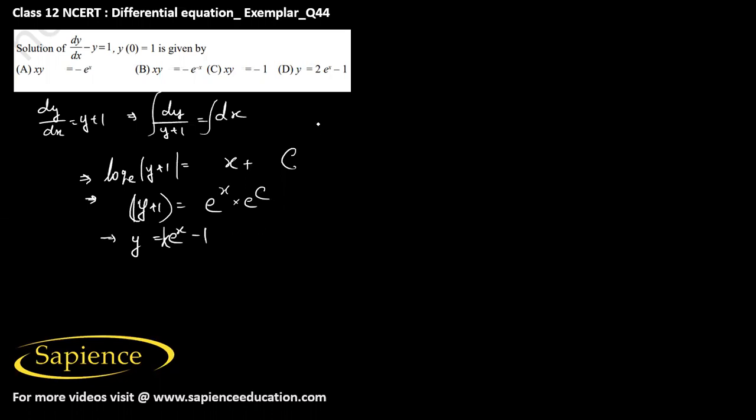And then it is told that y equals 1 when x equals 0, so therefore I can write 1 equals k times e power 0 minus 1, so k minus 1 equals 1.